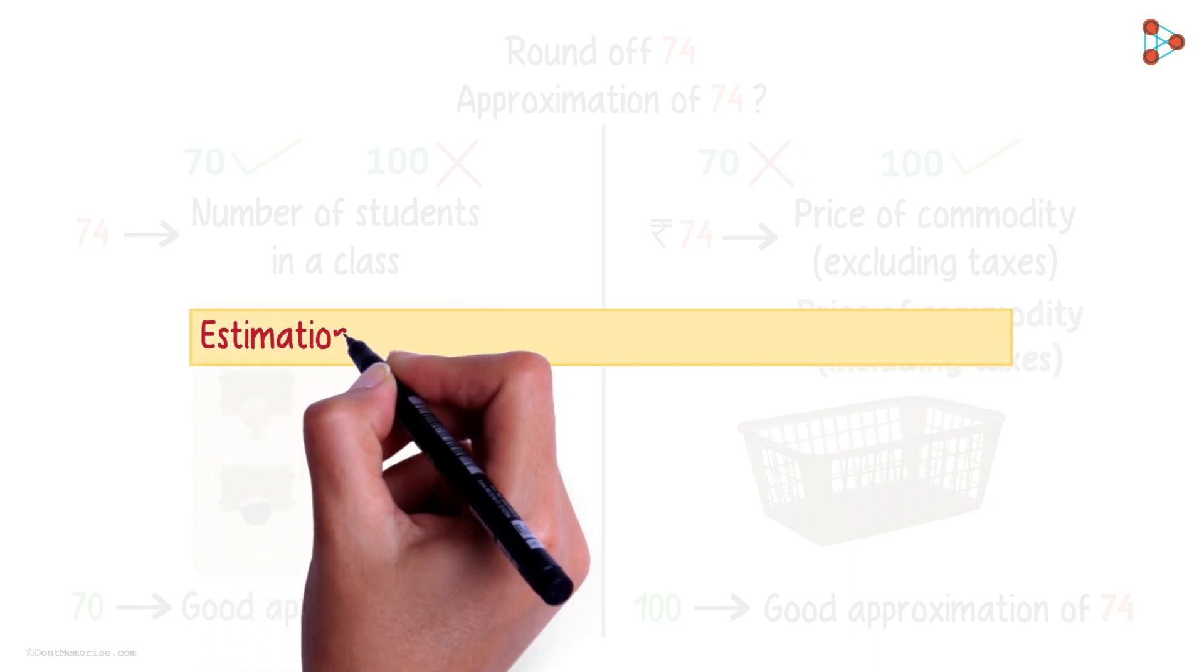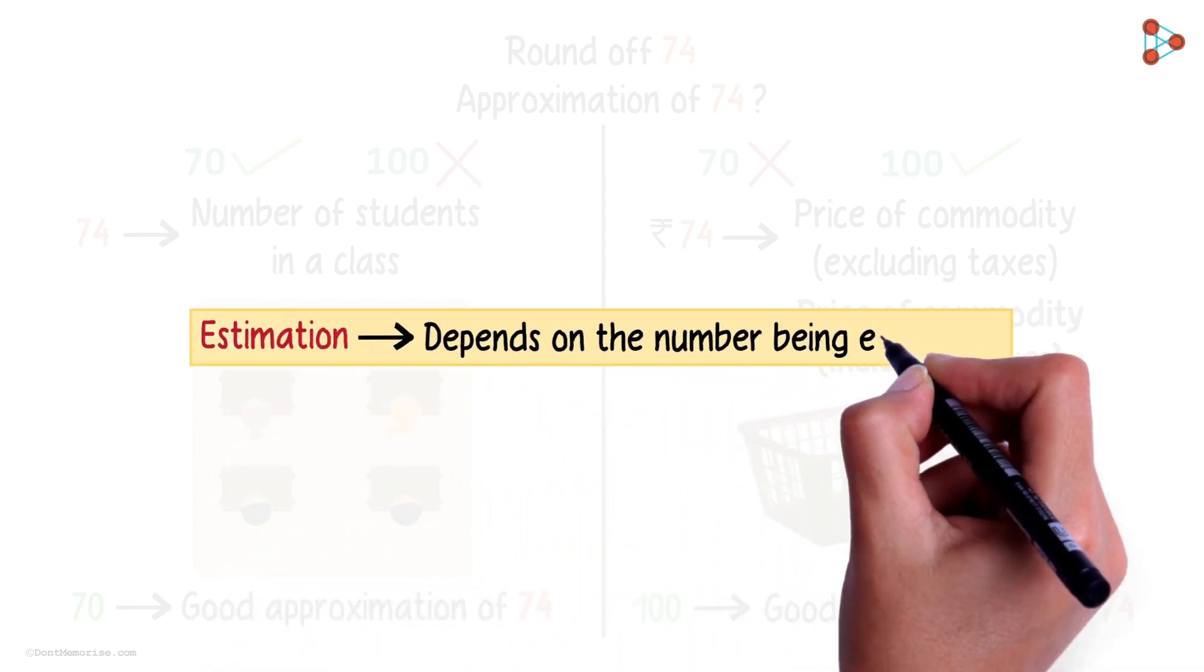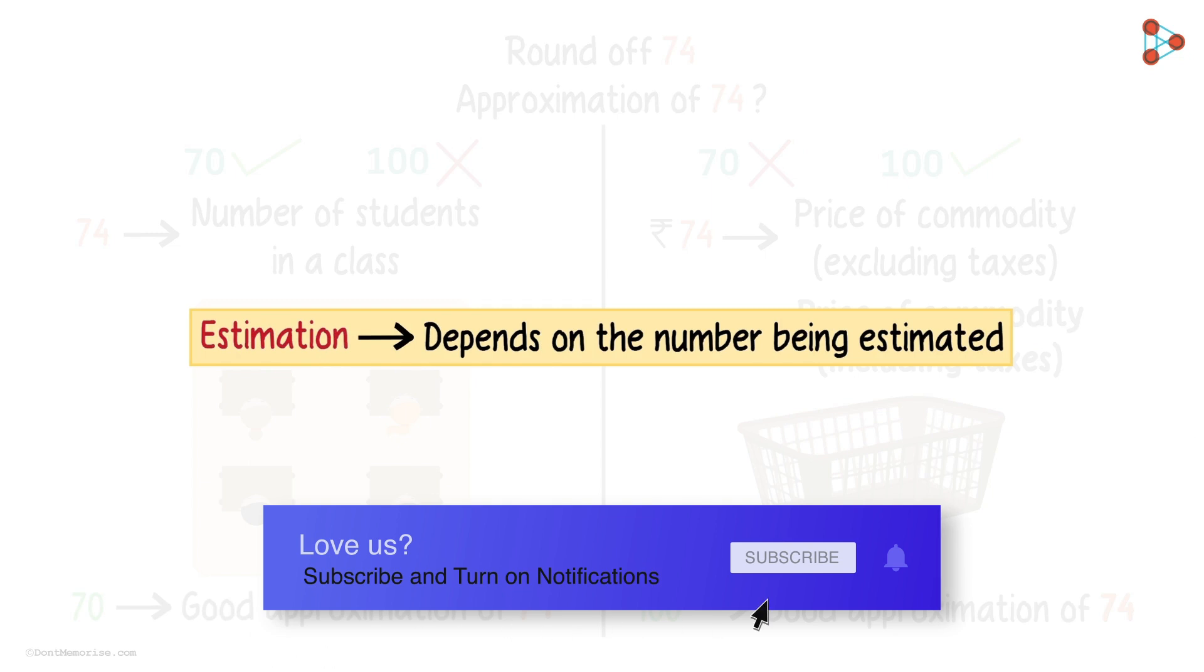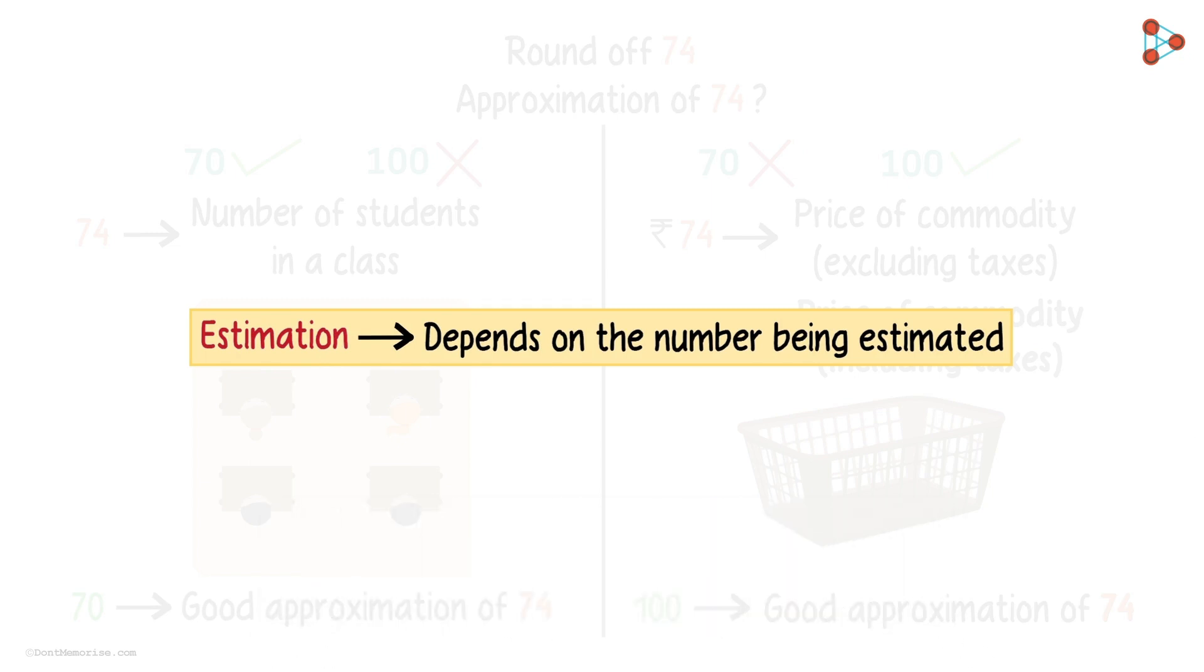So the estimation of any number solely depends on what that number is representing in the real world. Depending on what that number is representing, we can estimate the numbers in different ways.